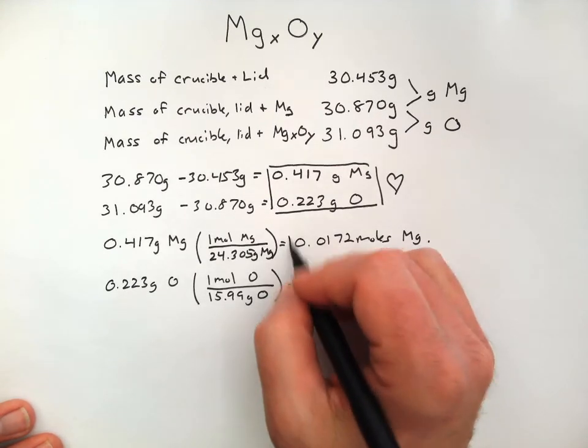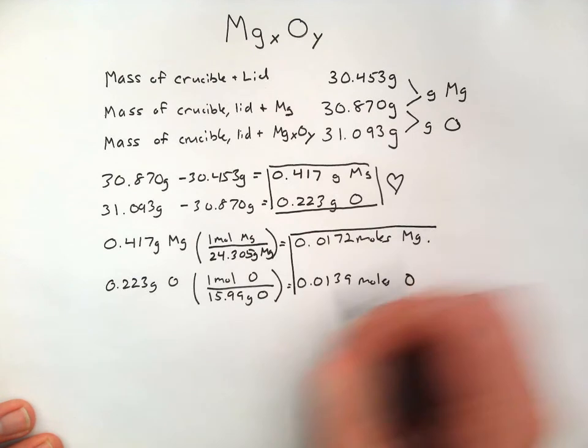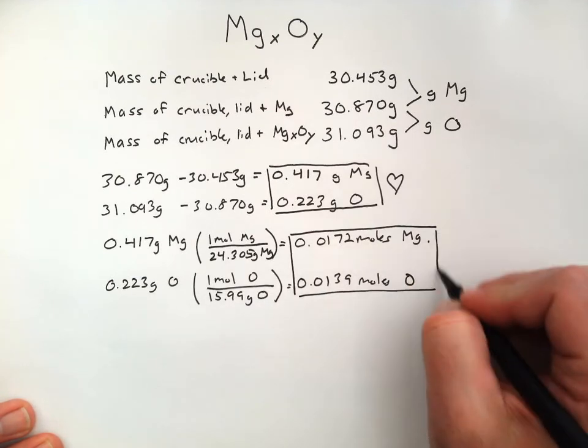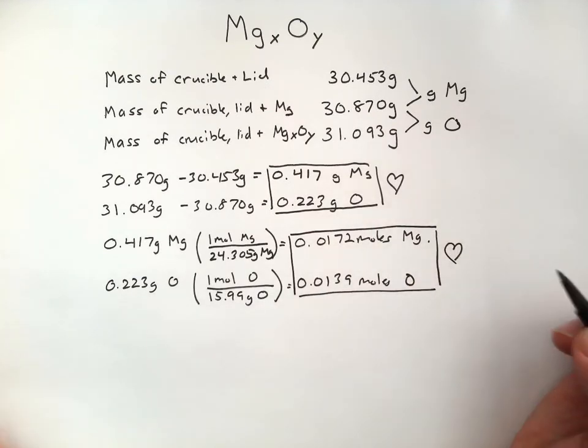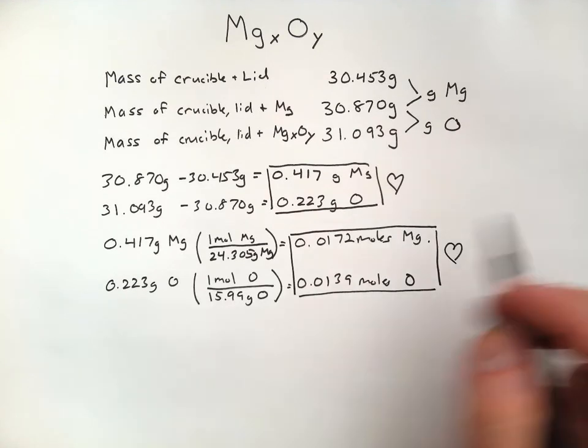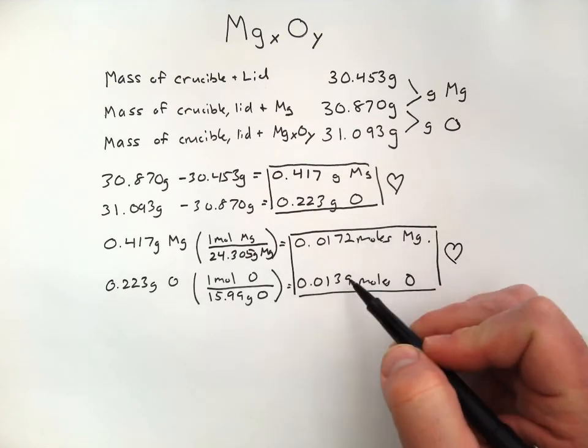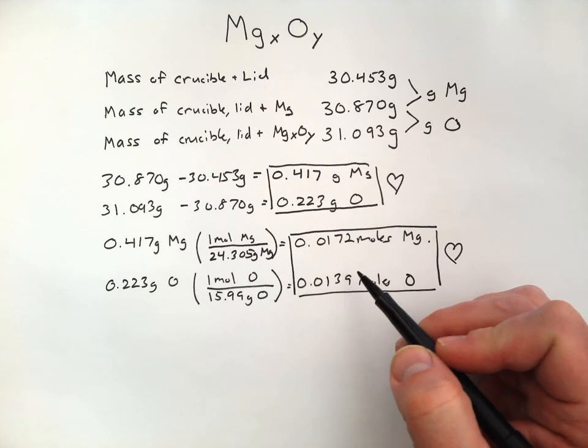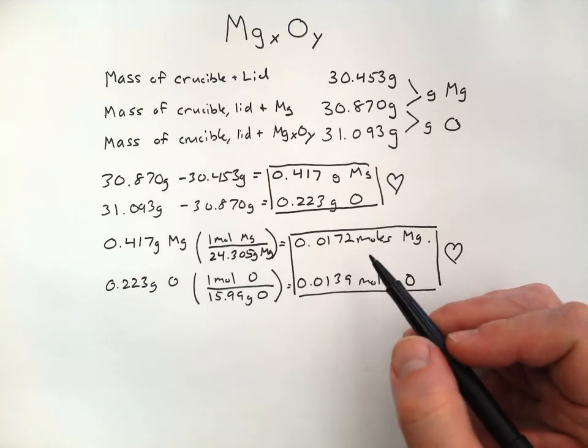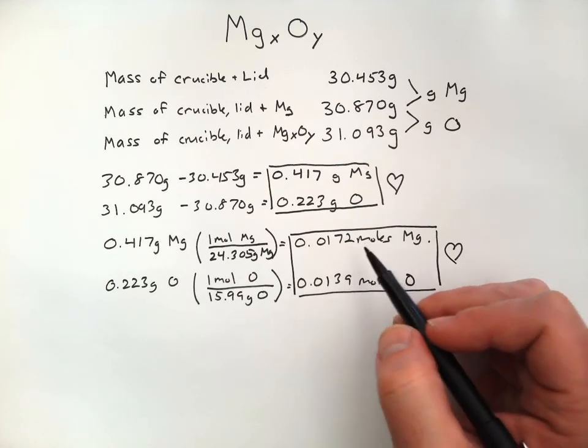So, now I have my amounts of magnesium and oxygen converted into moles. And, the actual empirical formula is simply the lowest whole number ratio of these moles. Now, right now, they're decimals. They're not whole numbers. They're kind of looking ugly.